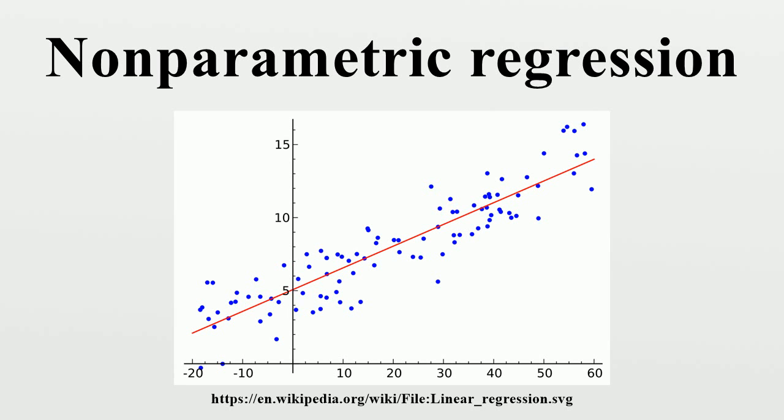Gaussian process regression or kriging: In Gaussian process regression, also known as kriging, a Gaussian prior is assumed for the regression curve.